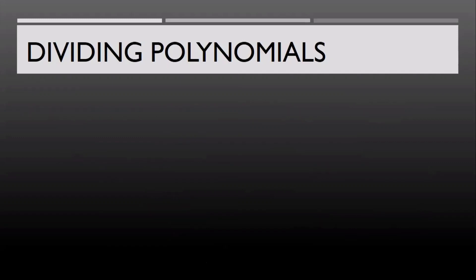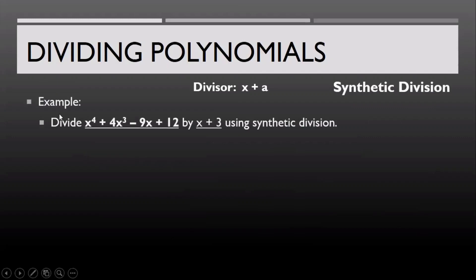Another way to find the quotient of two algebraic expressions with a divisor in the form x plus a is by synthetic division. For example, we have to divide x raised to 4 plus 4x cubed minus 9x plus 12 by x plus 3 using synthetic division.